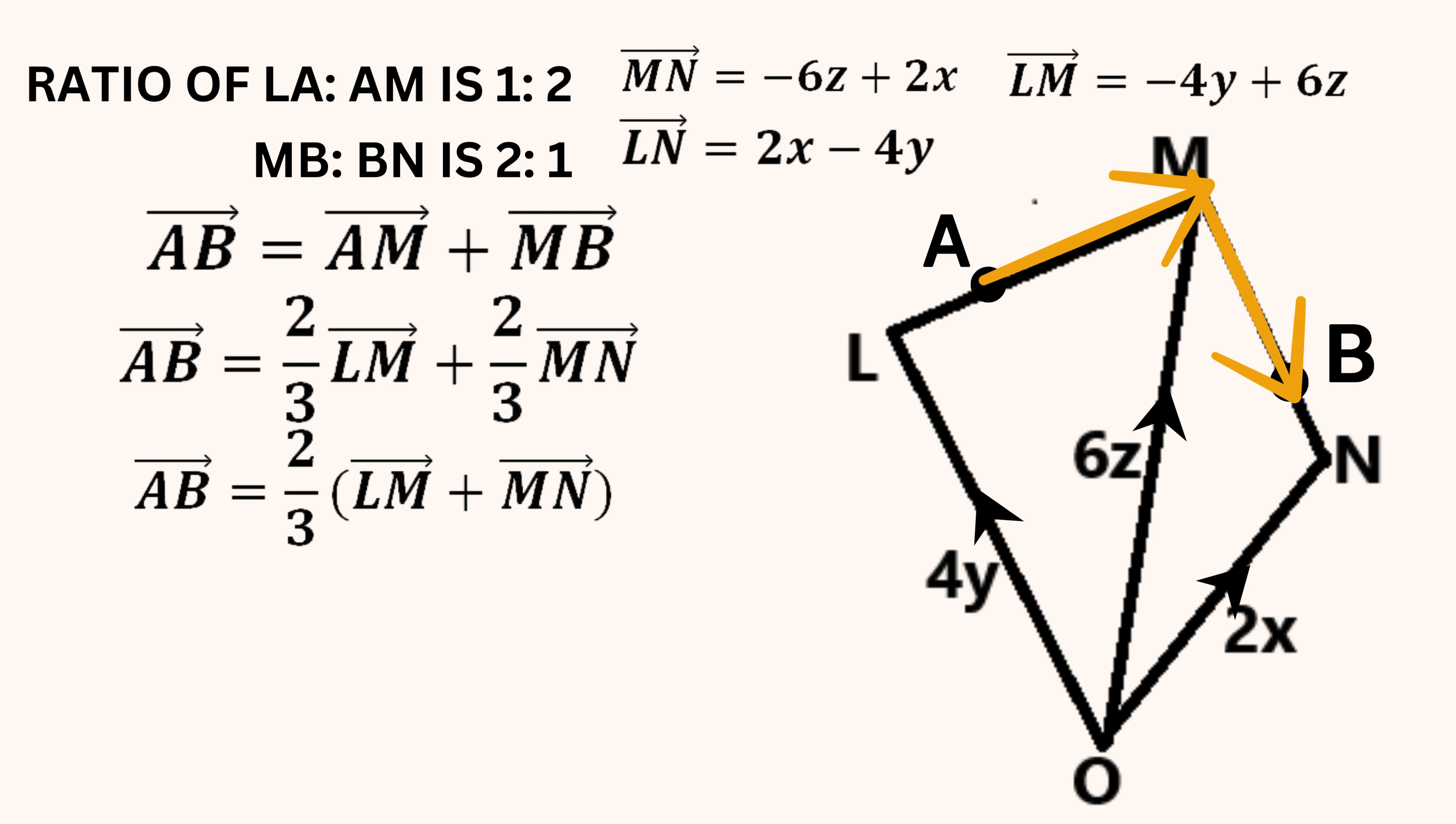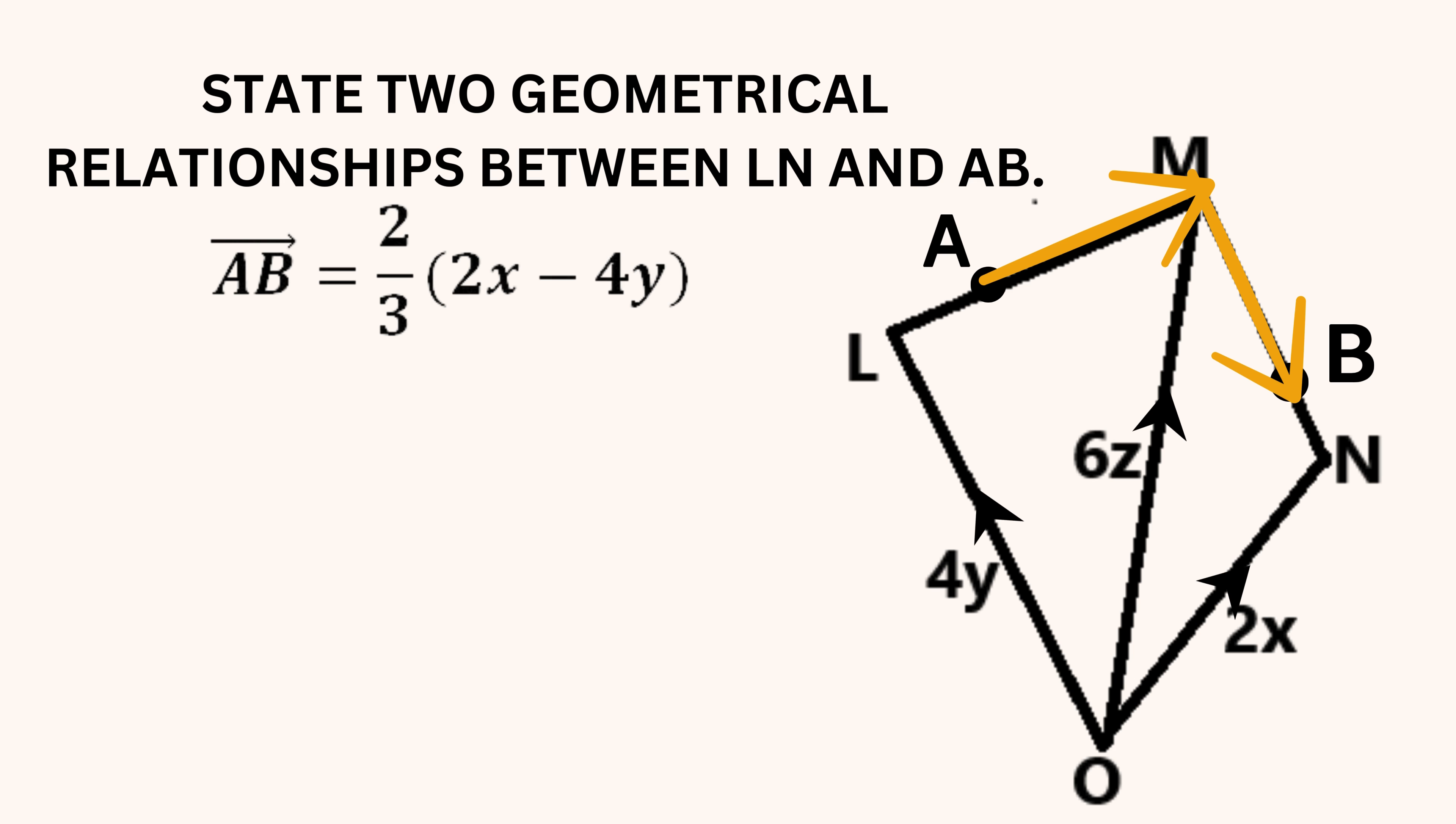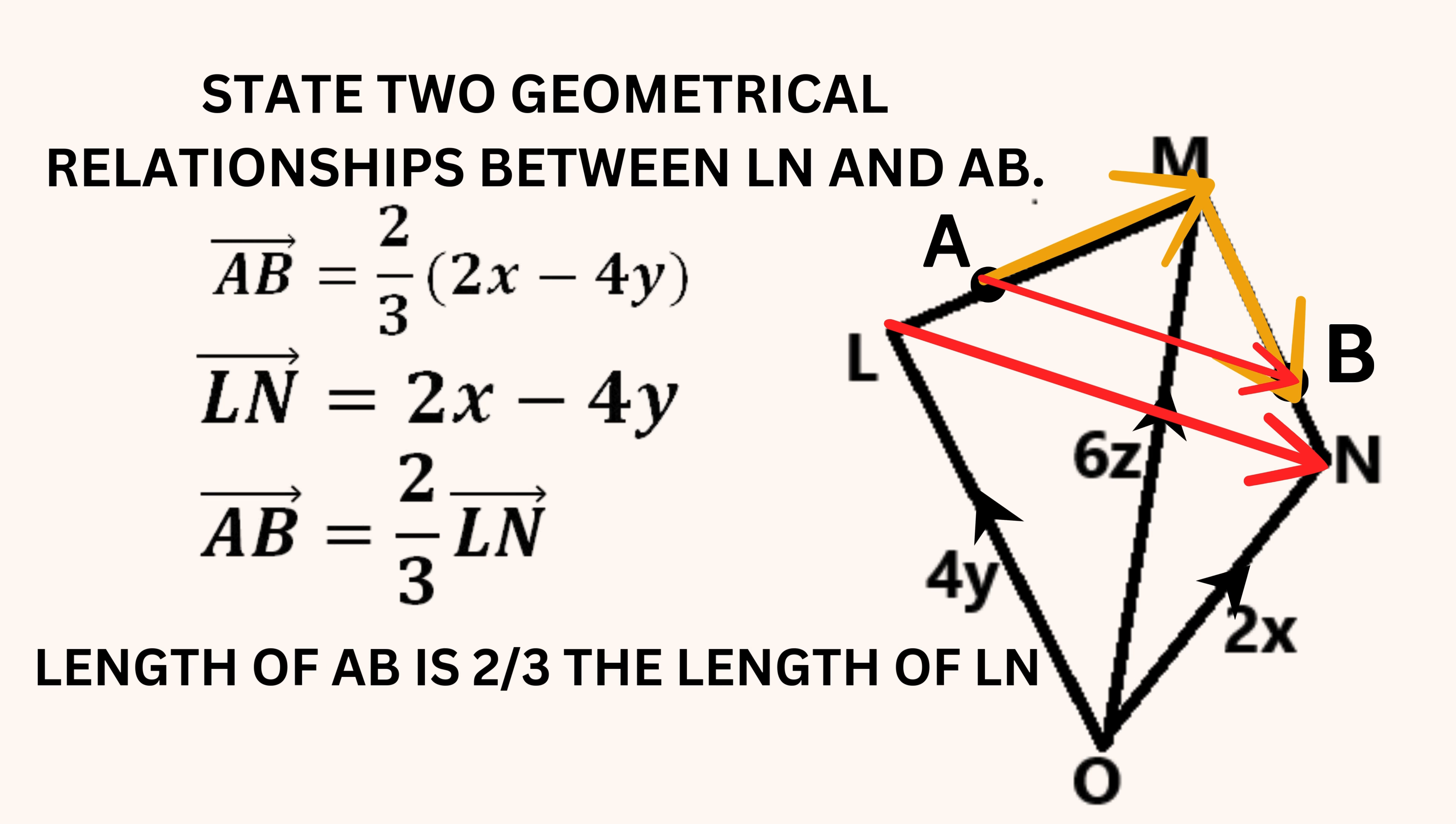Remember that we already calculated the vector LM, so we can substitute negative 4Y plus 6Z for LM. Vector MN was found earlier to be negative 6Z plus 2X, so we can substitute the terms into the equation. 6Z minus 6Z is zero, so we are left with positive 2X and negative 4Y in the brackets. Our final task in this question was to state two geometrical relationships between LN and AB. Notice that LN is the same as 2X minus 4Y, which means that AB is two-thirds times LN. The other geometrical relationship is vector LN is parallel to vector AB. Remember that two vectors are parallel to each other if we can multiply one vector by a constant to get the other vector. In this case, the constant is two-thirds.